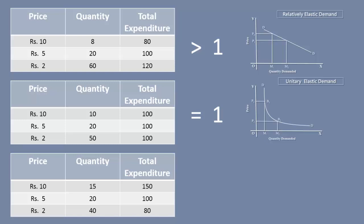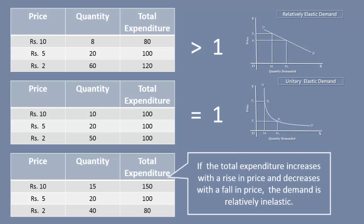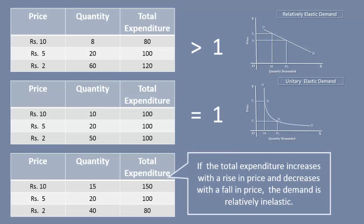Then we can say, if the total expenditure increases with a rise in price and decreases with a fall in price, the demand is relatively inelastic. It should be understood that by using the total expenditure method, one can identify whether the demand is relatively elastic, unitary elastic, or relatively inelastic. It will not assign a numerical value to the elasticity, as you have learned in the percentage method.